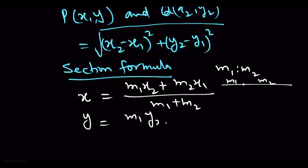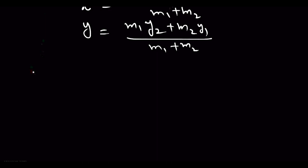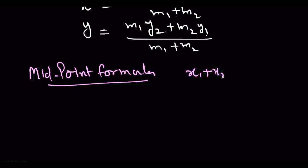What is midpoint formula? X ki value is x1 plus x2 upon 2, and y is y1 plus y2 upon 2.